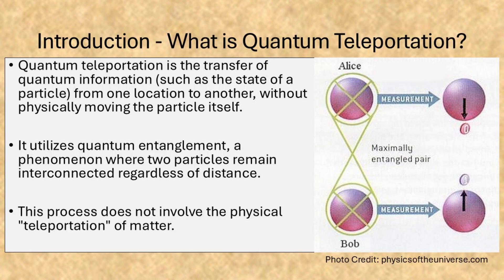Quantum teleportation is the transfer of quantum information, such as the state of a particle, from one location to another without physically moving the particle itself. It utilizes quantum entanglement, a phenomenon where two particles remain interconnected regardless of distance. This process does not involve the physical teleportation of matter.